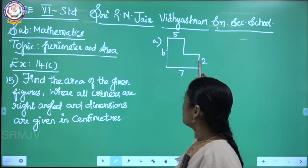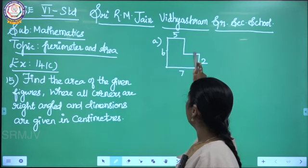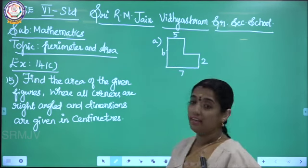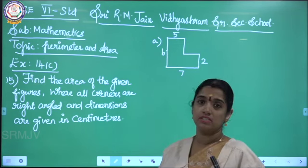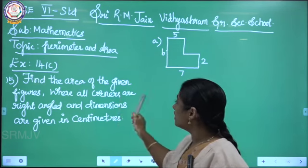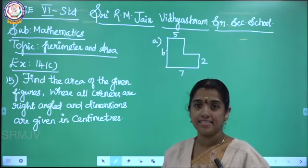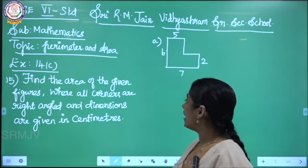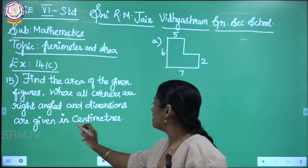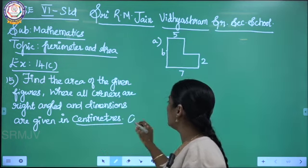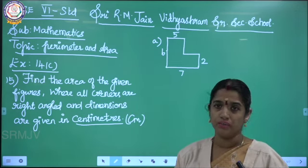See, this is a figure with how many sides are there? 1, 2, 3, 4, 5, 6 sides are there. And I am going to find the figure for this, where all corners are right angle. Right angle means 90 degrees. And dimensions are given in centimeter, so the unit is centimeter.